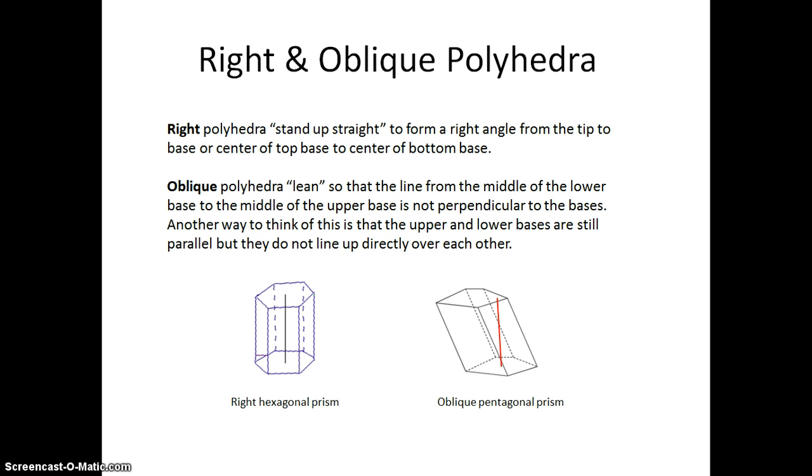This is like when we take a ream of paper and sort of shuffle it so it leans to one side so it's easier to pick off one sheet at a time. We've changed that ream of paper from being right to being oblique.